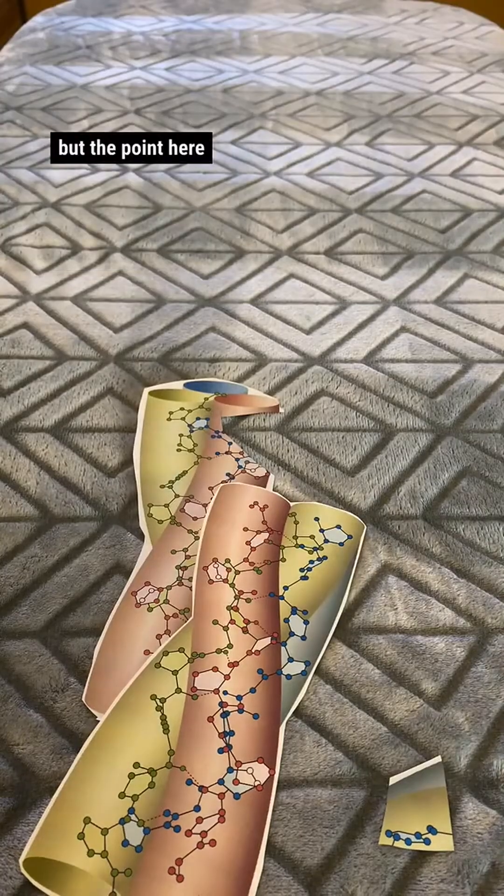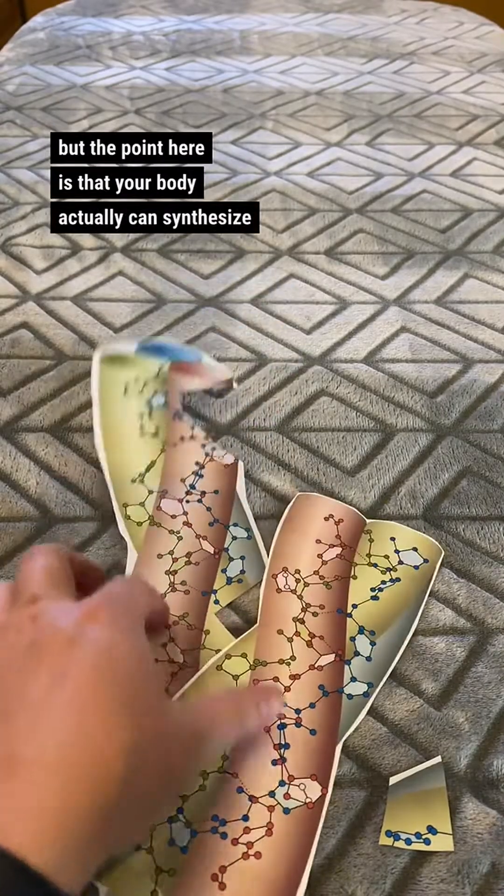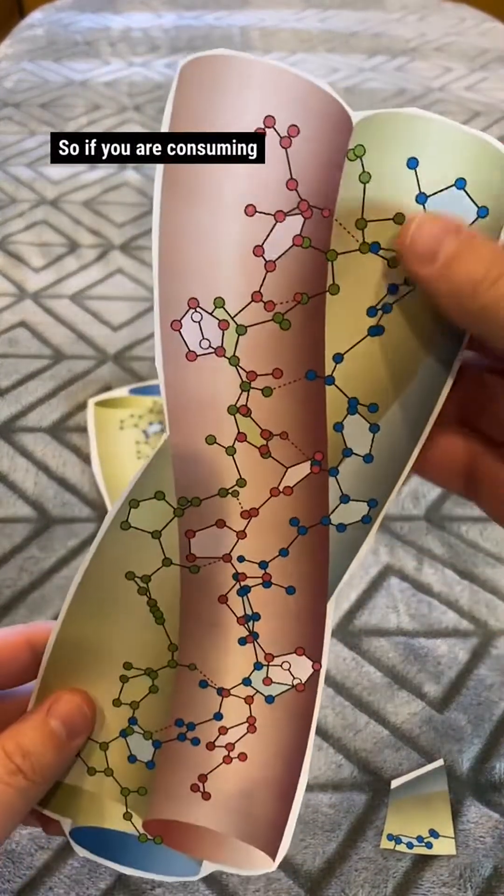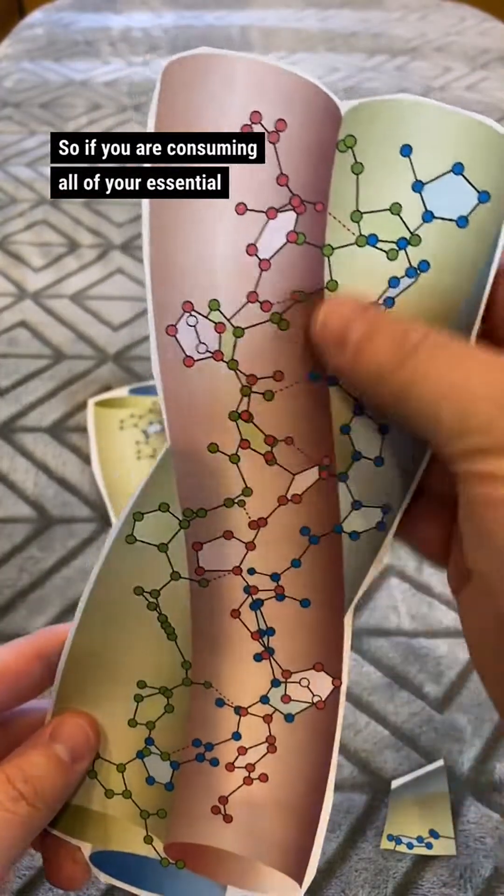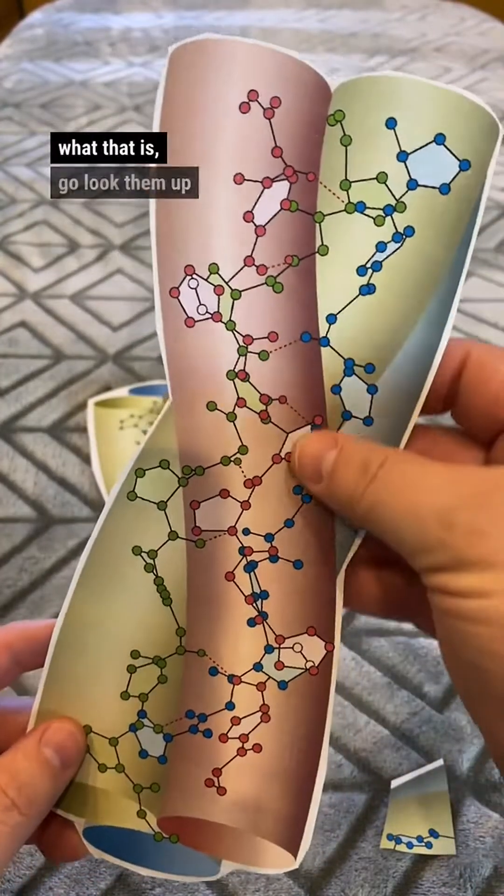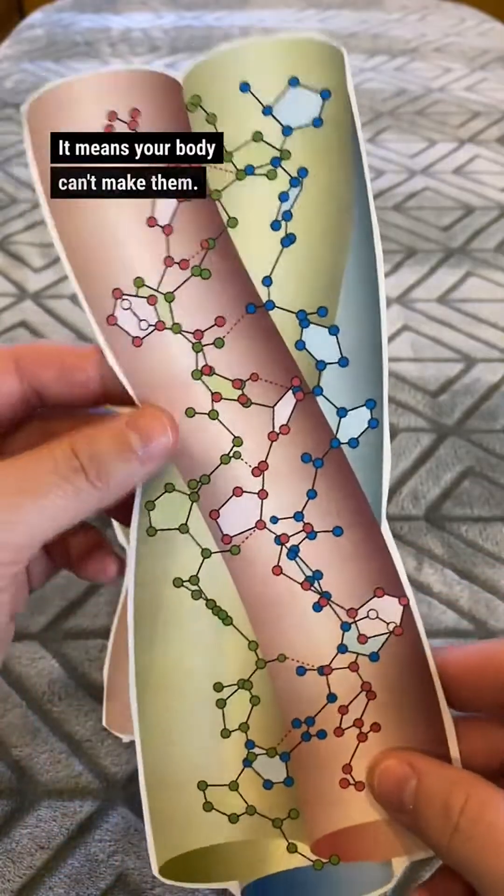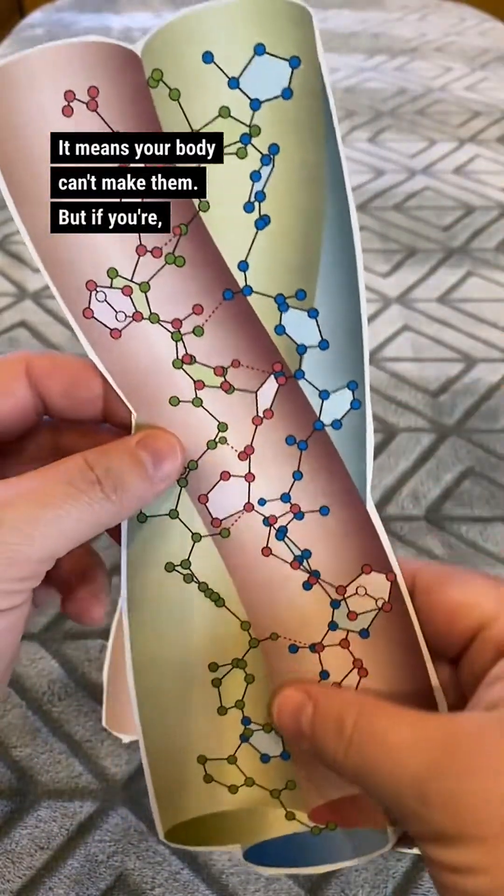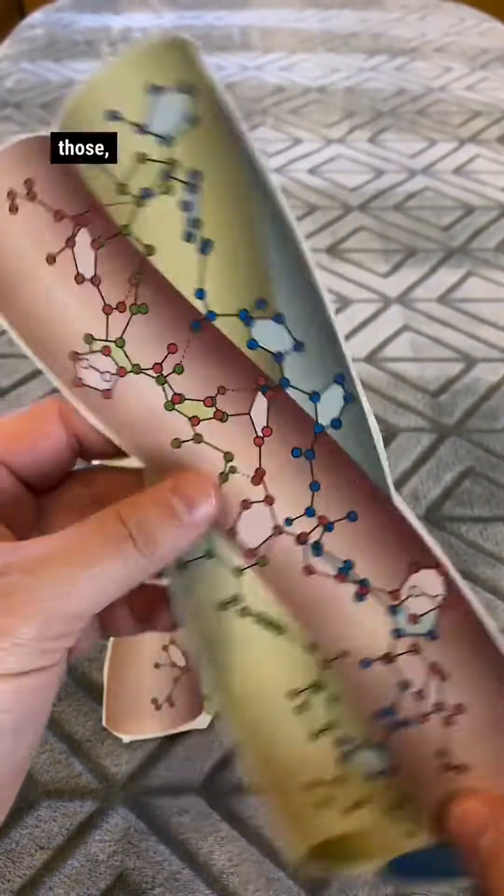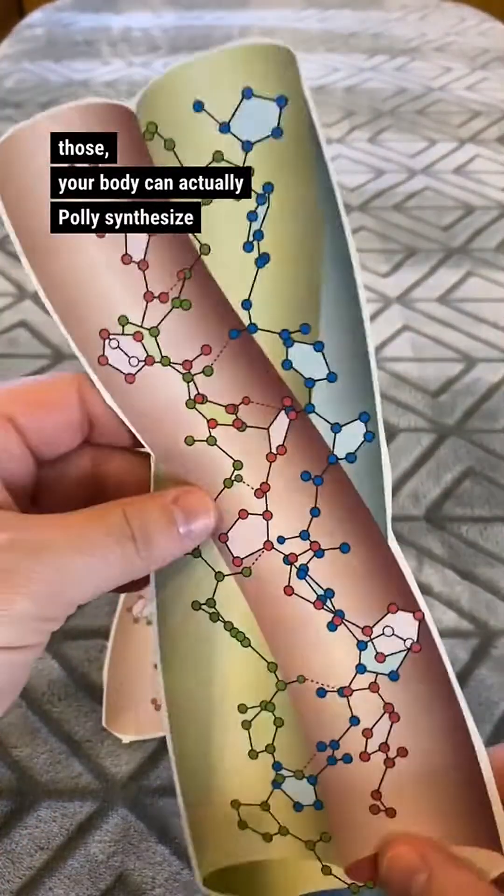But the point here is that your body actually can synthesize this. So if you are consuming all of your essential amino acids, if you don't know what that is, go look them up because you have to eat them. It means your body can't make them. But if you're consuming those, your body can actually synthesize this molecule.